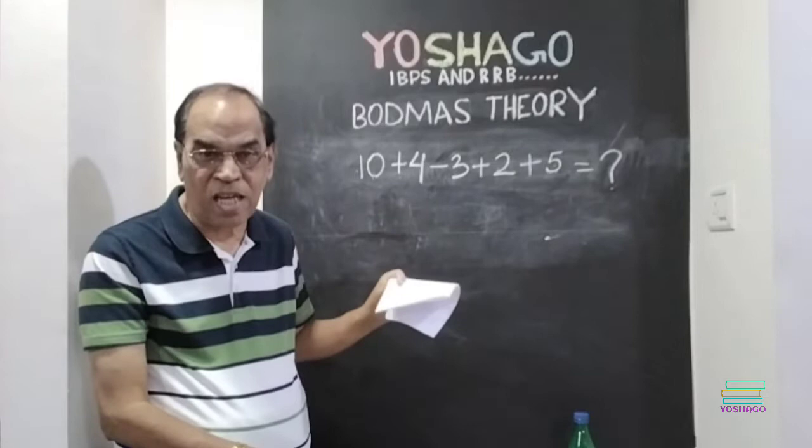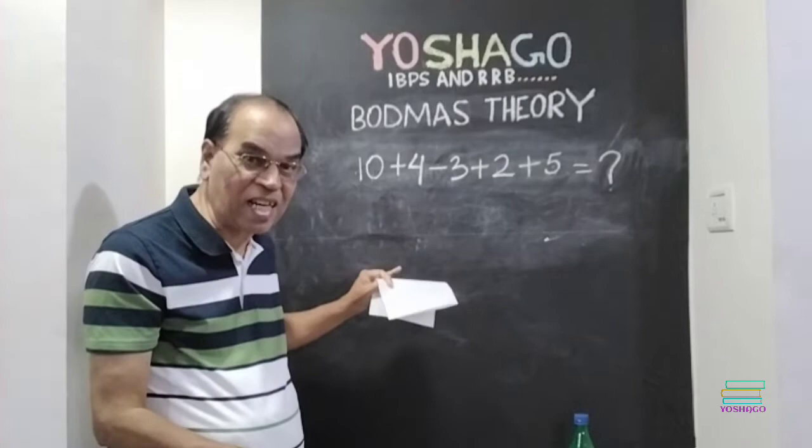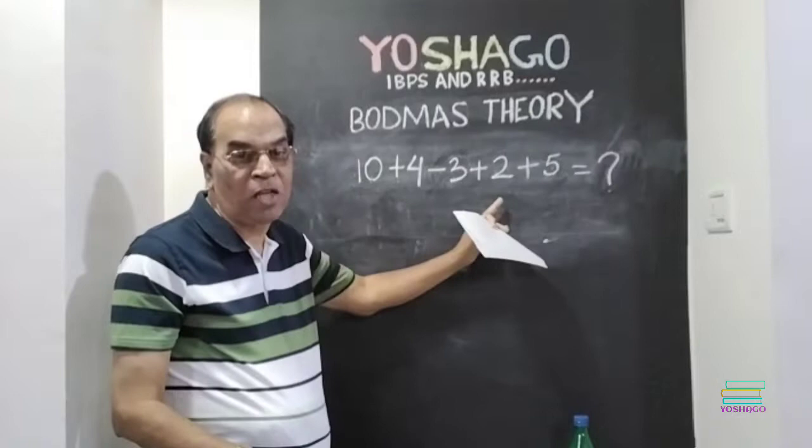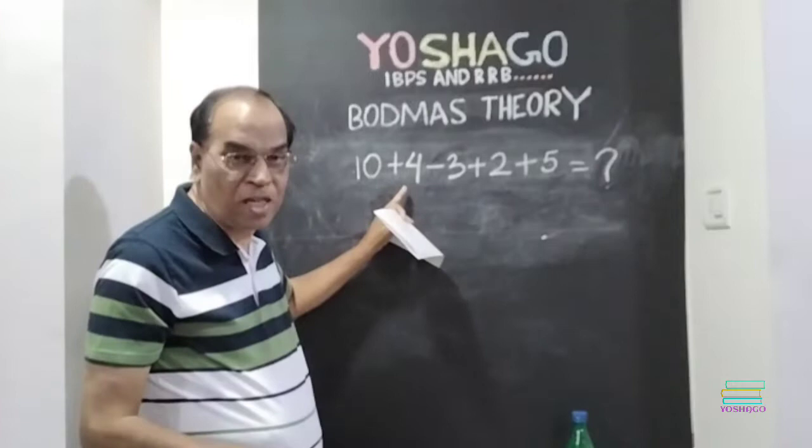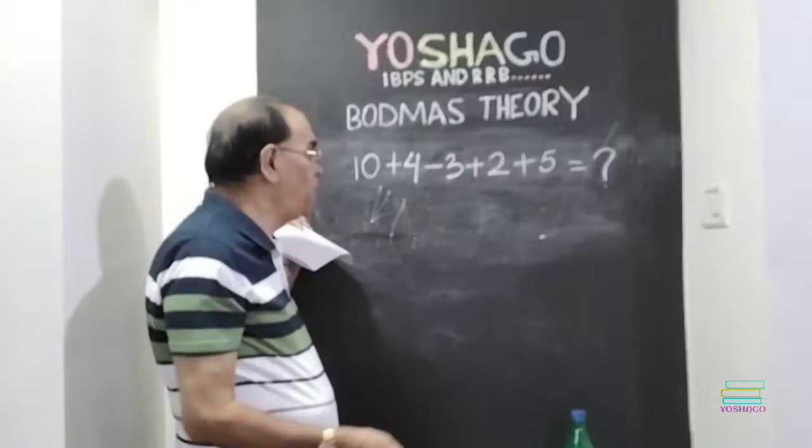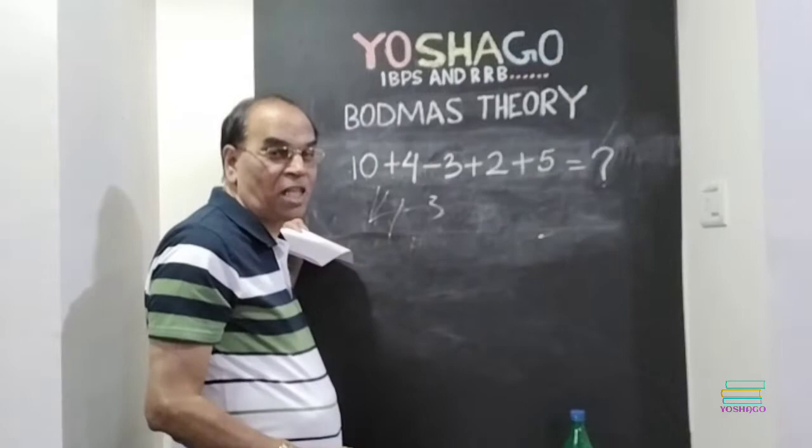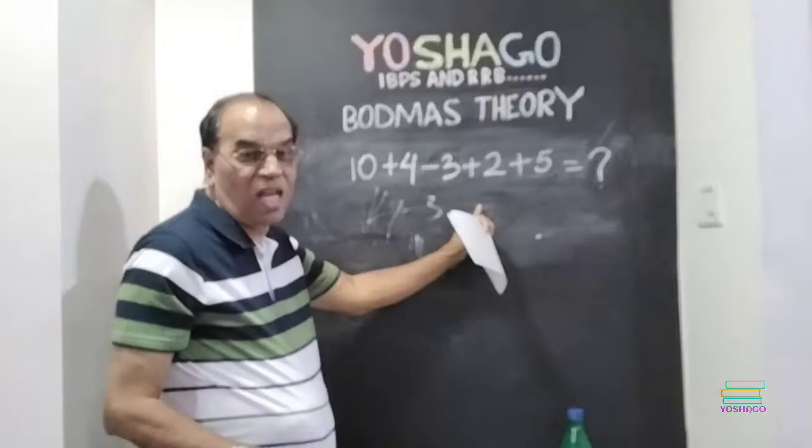The first problem is I have written 10 plus 4 minus 3 plus 2 plus 5. This is the problem. 10 plus 4, 14. Now, here minus 3, how much is it? 14 minus 3, 11. 11 plus 2, how much is it? 13. 13 plus 5, how much is it? 18.